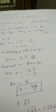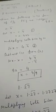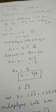So, we multiply both sides of equation 1 by 10. 10x is equal to 4.4 bar. Now, subtract equation 1 from equation 2. 10x minus x 4.4 bar minus 0.4 bar 9x is equal to 4 and x is 4 by 9 which is in the form of p by q where p and q are integers and q not equal to 0.